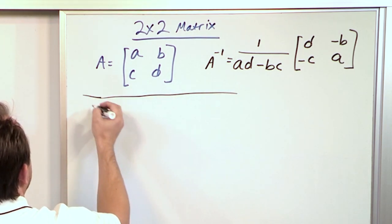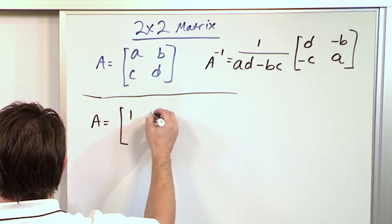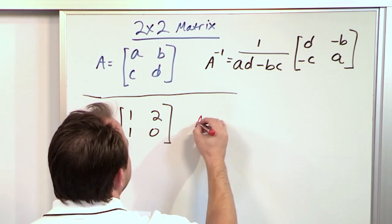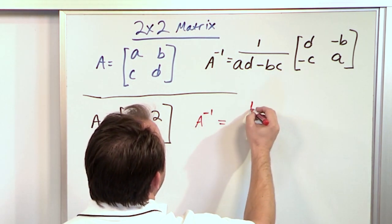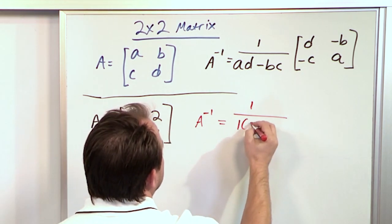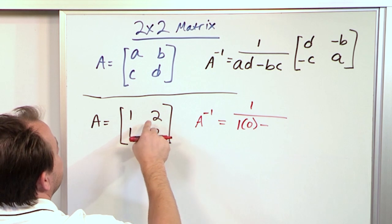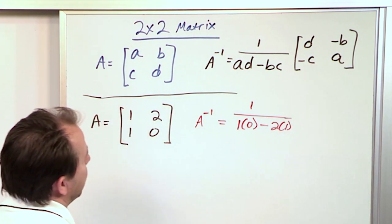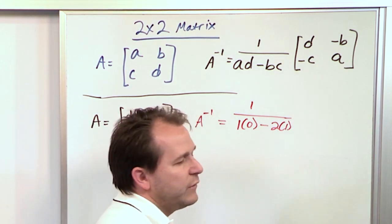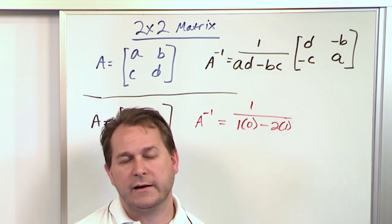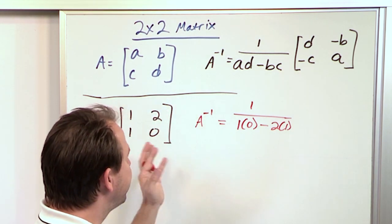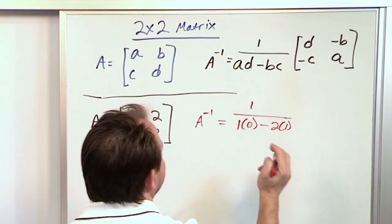Let's do a quick example. We have the matrix 1, 2, 1, 0, and we want to calculate its inverse. The inverse is going to be one over A times D minus B times C — that's one times zero minus two times one. You can think of this as a crisscross: this times this forming an X, minus this times this. For those who have studied matrix algebra, this quantity in the denominator is basically the determinant of the matrix.